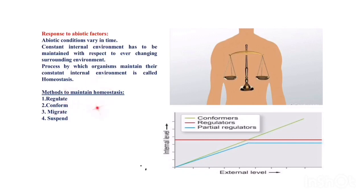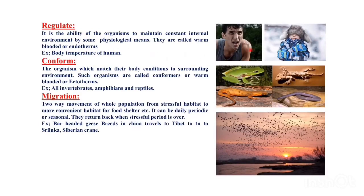Regulation: the best example is human beings. During summer, outside temperature is higher, so body temperature tends to rise, but since our normal body temperature is 37°C, our body sweats profusely to release excess heat. During winter, outside temperature is lower, so we shiver continuously to generate heat and maintain 37°C. This is regulation — the ability of an organism to maintain a constant internal environment by physiological means. Such organisms are called warm-blooded or endotherms.